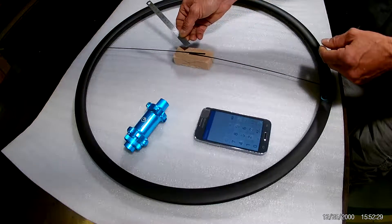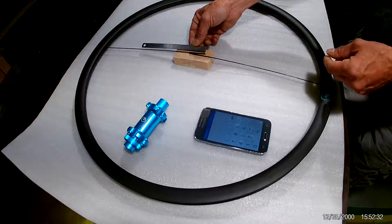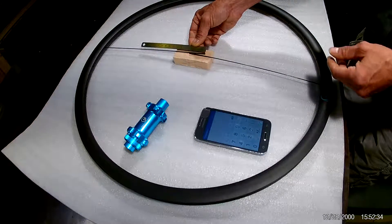Now you can see that the spokes overlap and we're going to measure that overlap. In this case, the overlap is 35 millimeters.